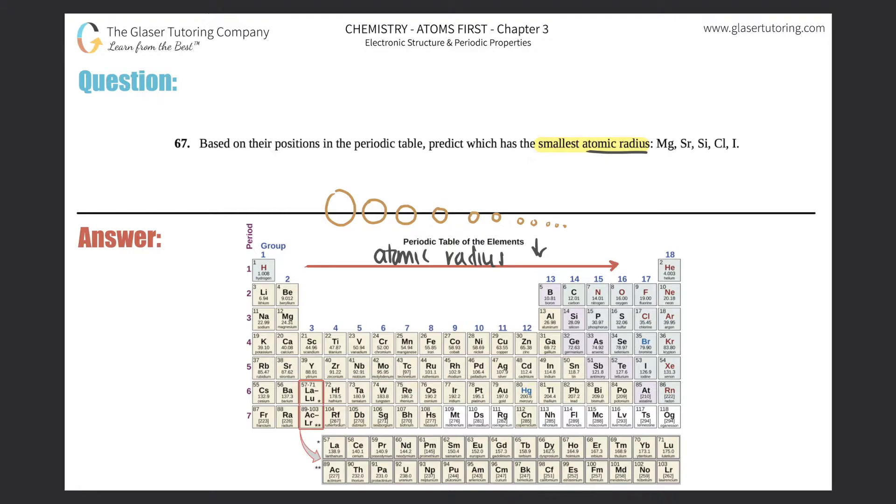The second trend is as you go down a group, your atomic radius increases. So that means you start small and then get bigger and bigger as you go down.